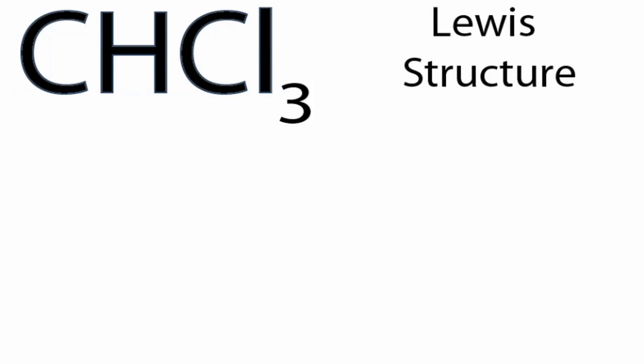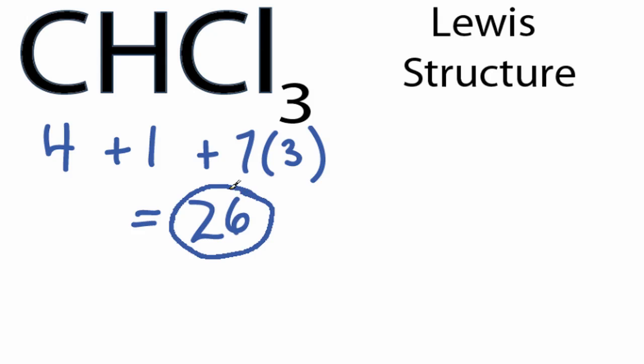For the CHCl3 Lewis structure, carbon is in group 14, or 4, so it has 4 valence electrons. Hydrogen has 1. Chlorine has 7, but we have 3 chlorines for a total of 26 valence electrons for the CHCl3 Lewis structure.